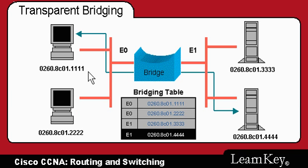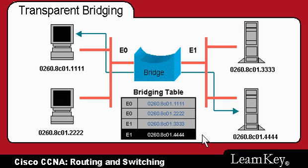In this example, this node wants to transmit a frame with this as a destination address. It's not on the local segment, so the bridge will have to perform the forwarding. Because the bridge has this MAC address in its bridge table as being attached to Ethernet 1, it will hear that frame on Ethernet 0 and forward it out to Ethernet 1. Other nodes will also hear that frame, but they will not listen to it because they are not the destination address for it.